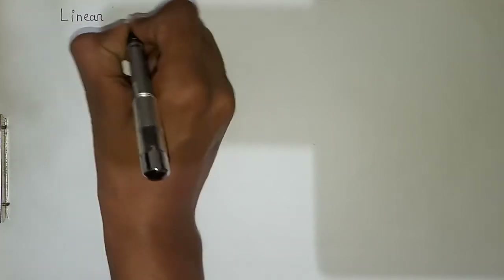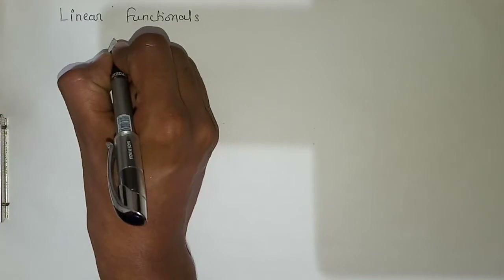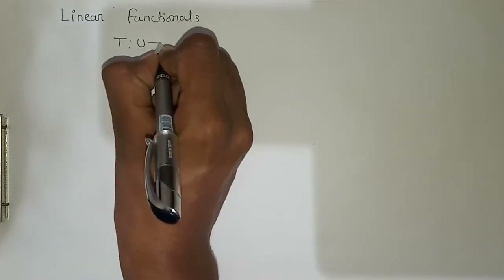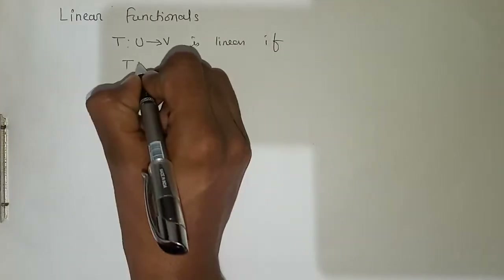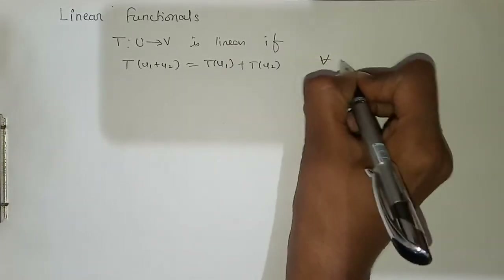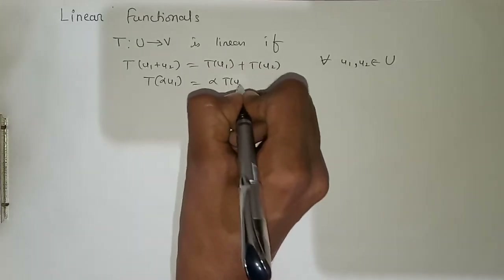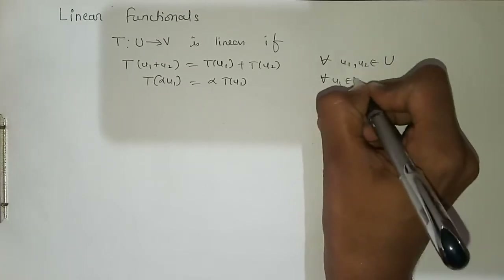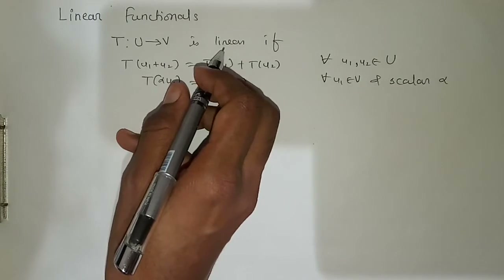Today we are going to see our next topic which is linear functional. We have studied that if we have any mapping T which is from U to V, then we say that this is a linear mapping if it satisfies: T(u1 + u2) = T(u1) + T(u2) for all u1, u2 in U, and T(α·u1) = α·T(u1) for all u1 in U and scalar α.